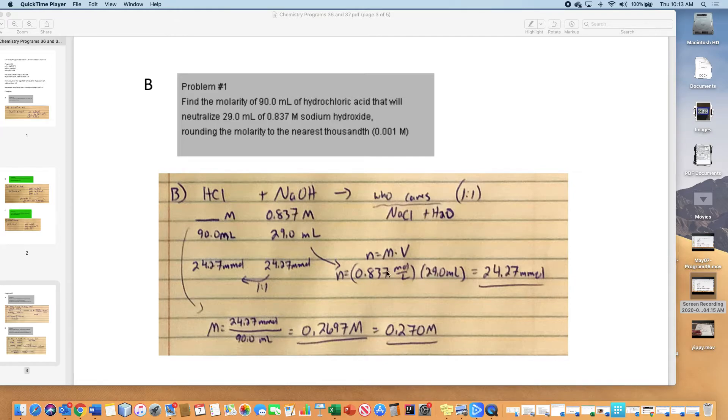If you have this molarity and volume, you have 24.27 millimoles. It's a one-to-one ratio. So the molarity is the millimoles divided by the milliliter. In the previous problem, we found volume. In this problem, we're finding molarity. So this divided by this is 0.270 molar.